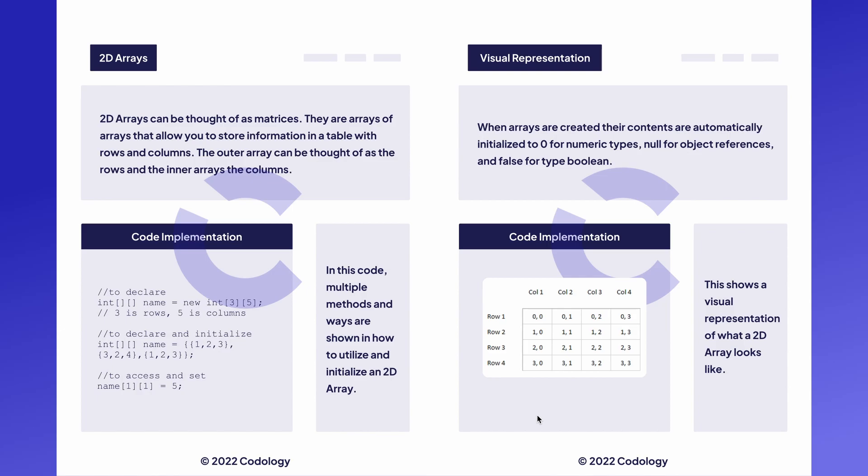One thing to note is that when 2D arrays are created, their contents are automatically initialized to 0 for numeric types and integers, null for object references, and false for type boolean. This is true of 2D arrays and also regular arrays.